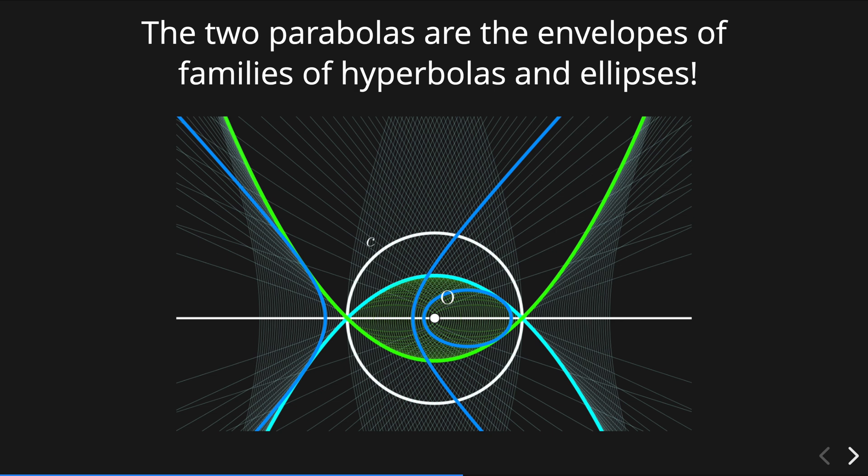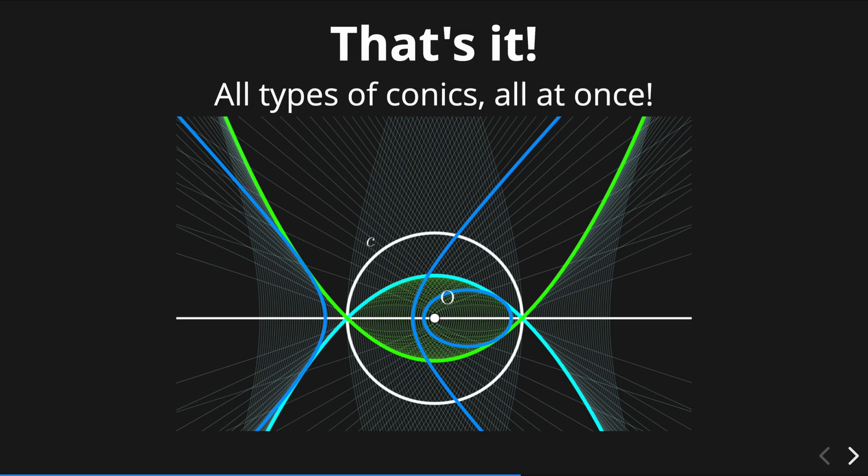The two parabolas that we just obtained are the envelopes of families of hyperbolas and ellipses. And that's it—we just obtained all types of conics all at once.